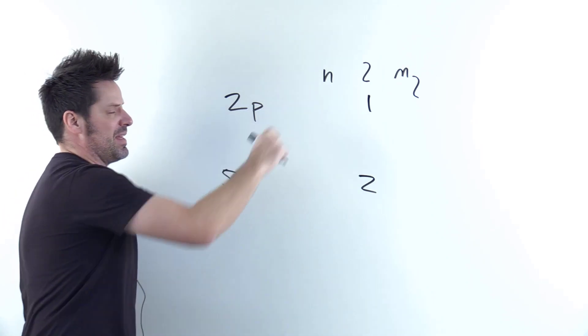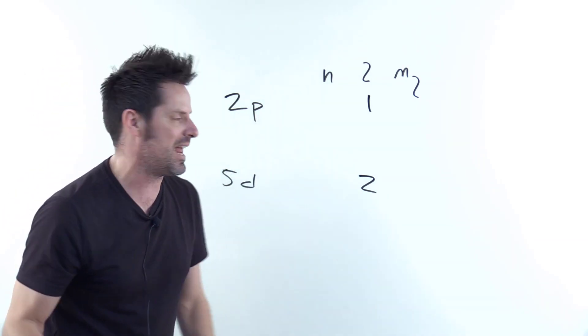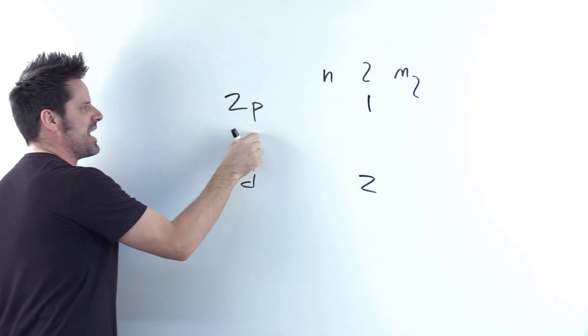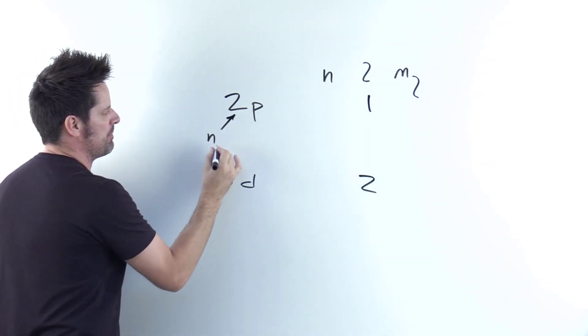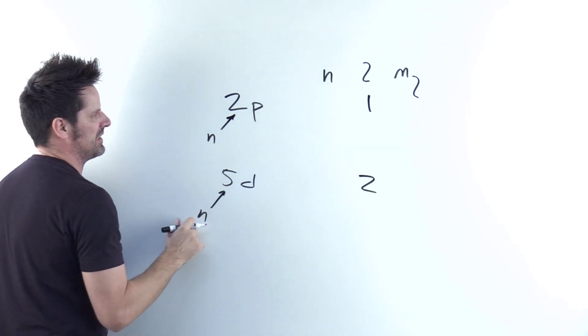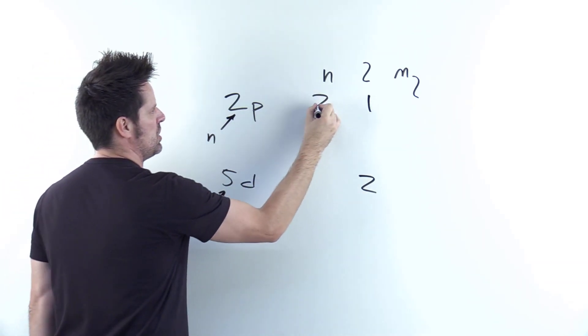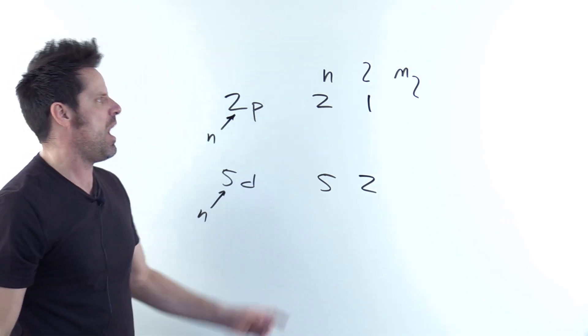Now what about the n number? That's the principal quantum number. When we're listing out orbitals, that first number is the n number. So here it's 2 and this one here is 5. Piece of cake.